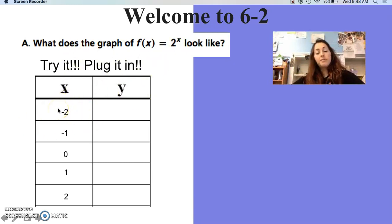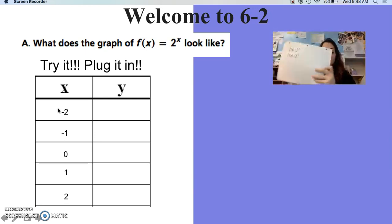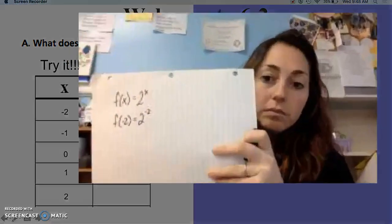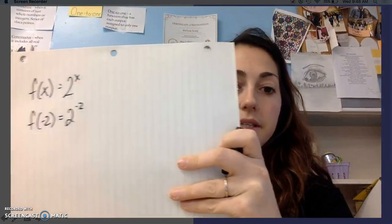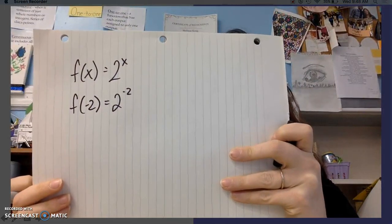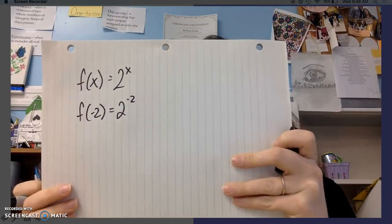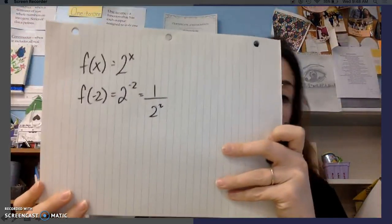When we plug it in, if we're plugging in negative 2 for x, I have f(x) equals 2 to the x power. Plugging in negative 2 for x, remember negative exponent means I've got to move it to the denominator. So that's 1 over 2 to the second power, and 1 over 2 squared is 1/4.